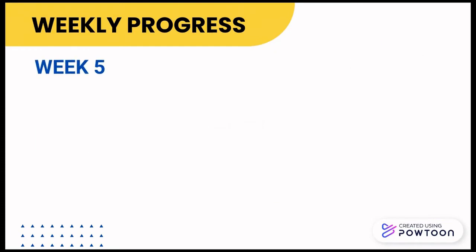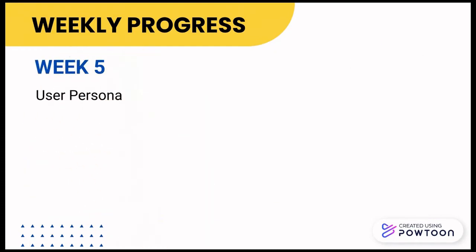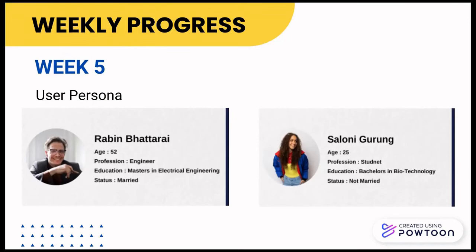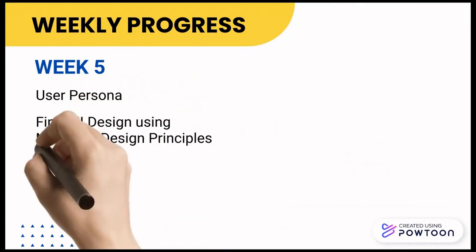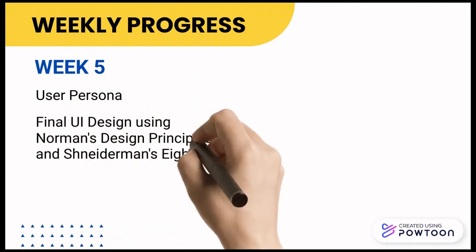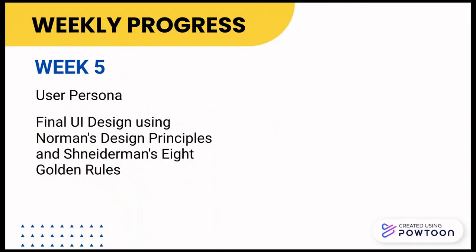On the fifth week, we conducted user personas of two people. We took a 52-year-old male and a 25-year-old female. Then we designed our final UI following Norman's design principles and Snyderman's eight golden rules.